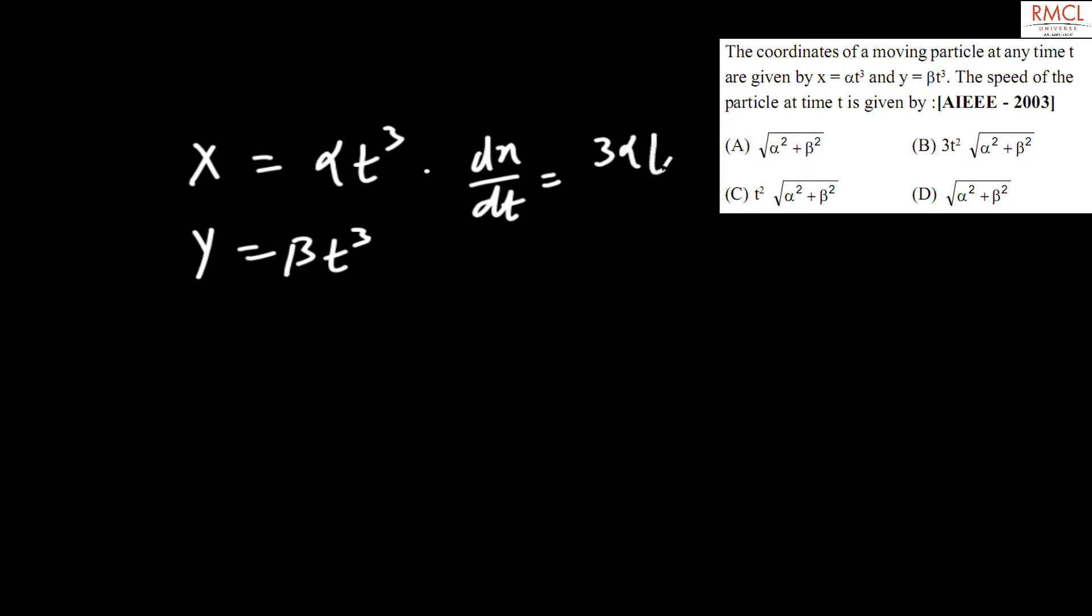three times alpha t square. And what comes out for dy by dt? dy by dt comes out to be three times beta t square.